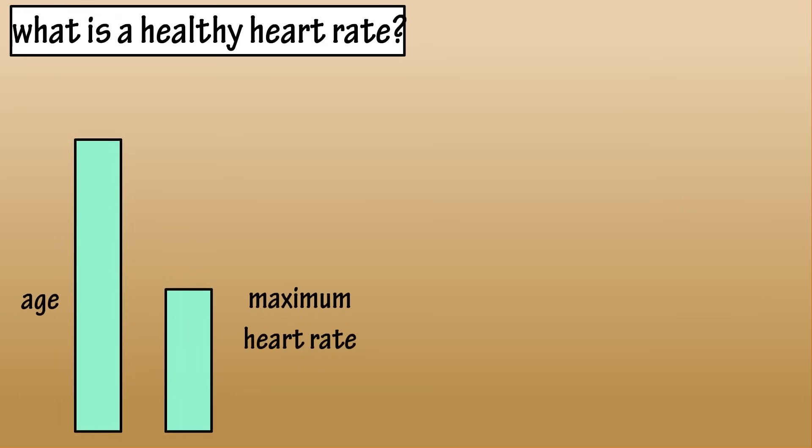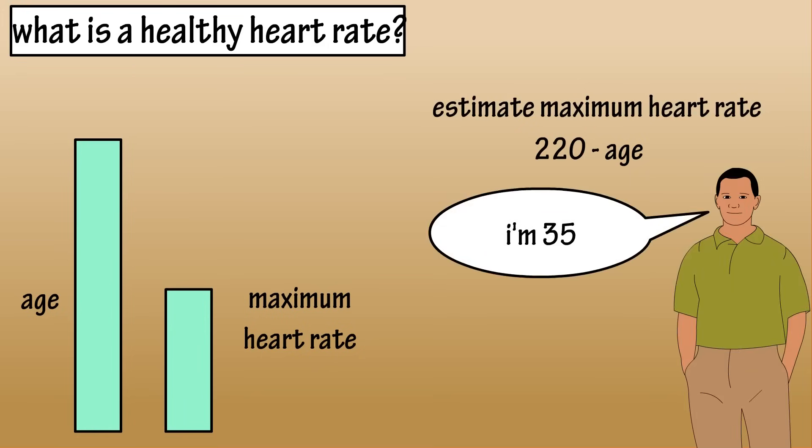There is a simple equation that is used to estimate a person's heart rate max: 220 minus your age. So for instance, for a 35 year old person, the equation would be 220 minus 35, which equals 185. So their max heart rate should be somewhere around 185 beats per minute. That would be at full physical exertion, like sprinting all out.